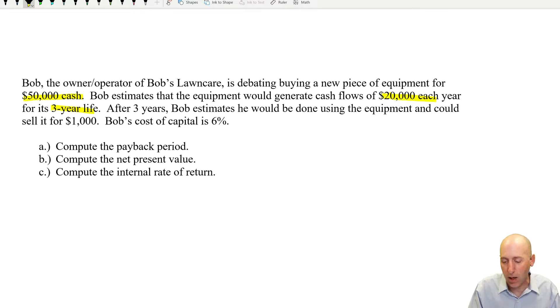After three years, Bob estimates he would be done using the equipment and could sell it for $1,000. That's another relevant cash flow. Bob's cost of capital is 6%. We'll talk about that more in a minute, but we can already solve problem A without talking about that.